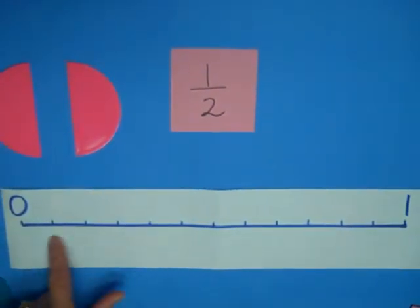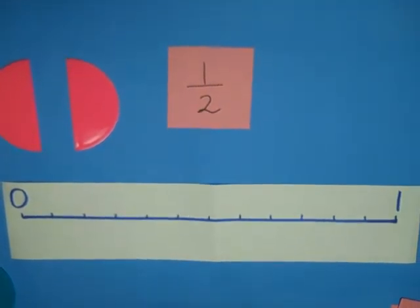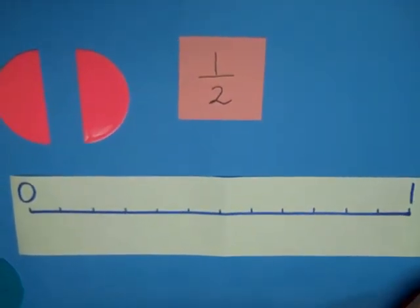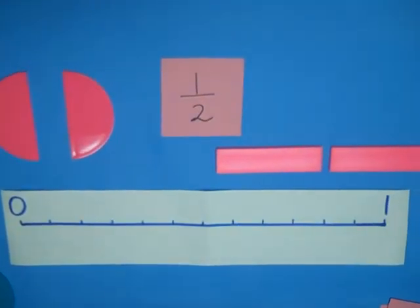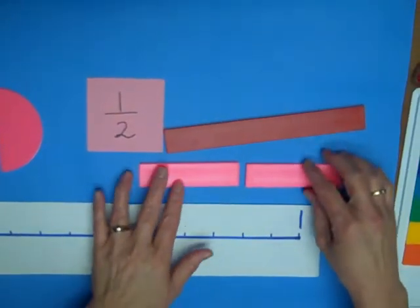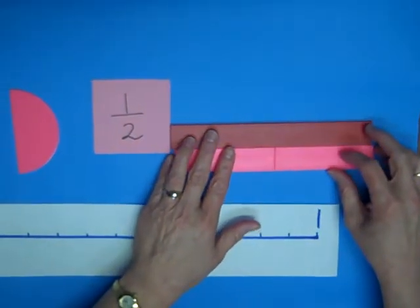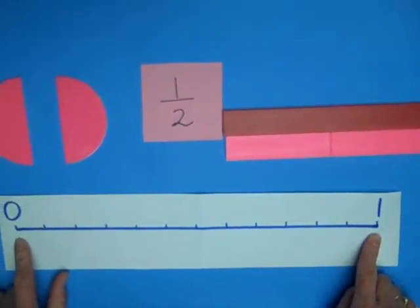So, can we do that with our number line? Now, if fraction circles are a little bit complicated, we could also use our fraction strips. So, here's my whole and I cut it into two parts. So, where would I find half on this number line?